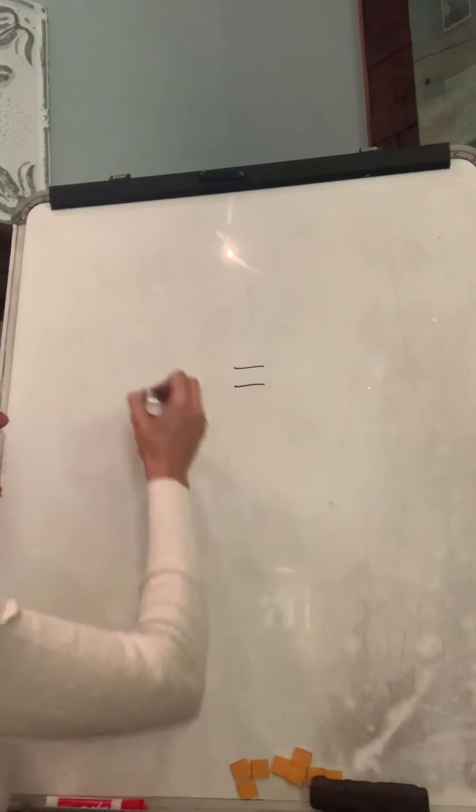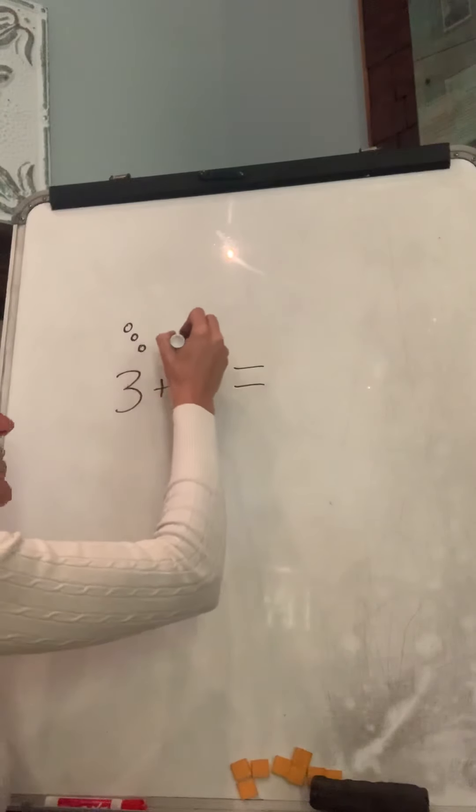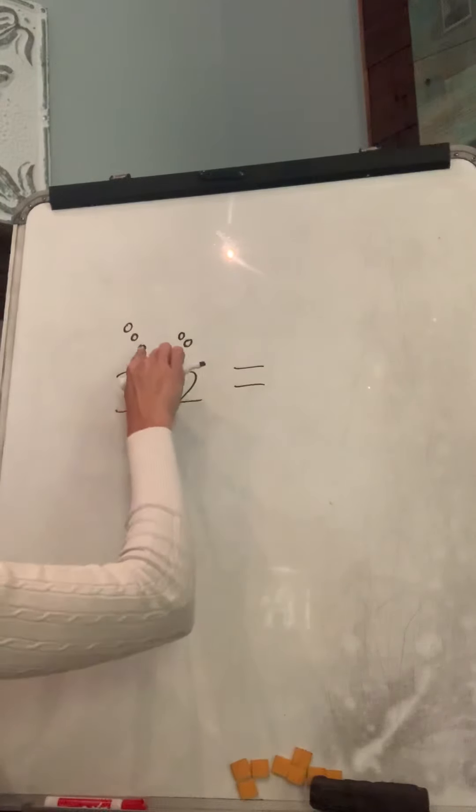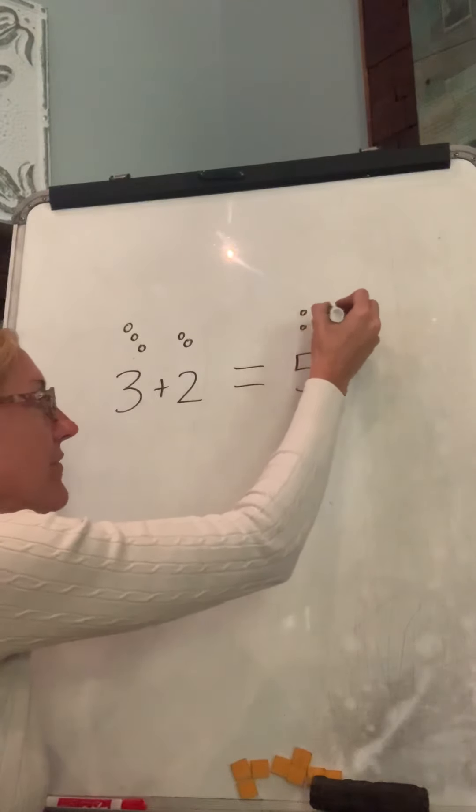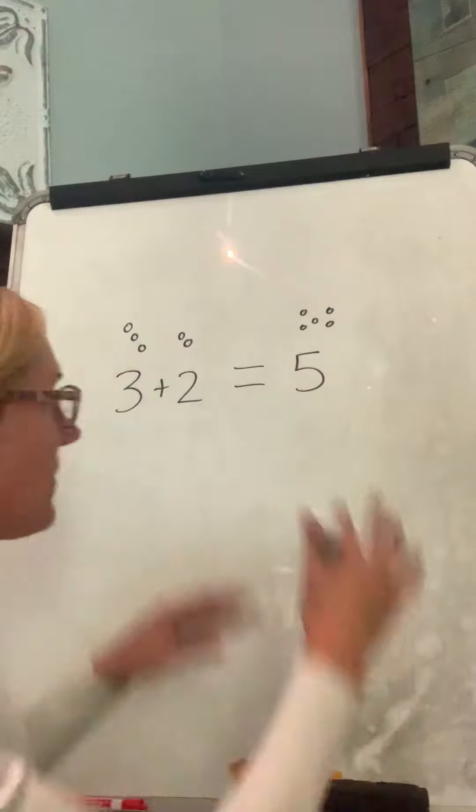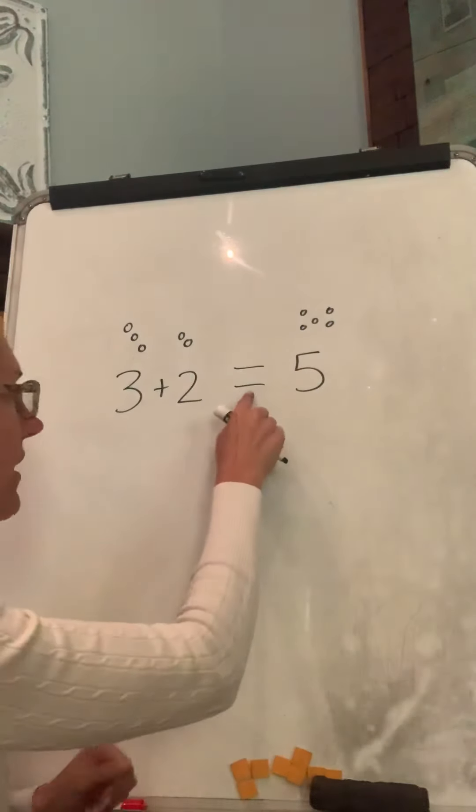And we talked about how three plus two would be the same thing as one, two, three, four, five. One, two, three, four, five. You have the same number of dots on both sides, so they are equal.